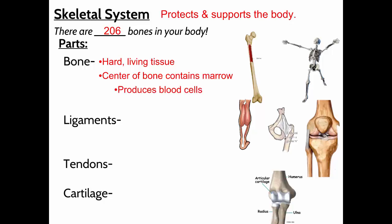Bone marrow produces our blood cells — we have different types: white blood cells and red blood cells — and the bone marrow is what produces those blood cells. It's in the middle of the bones, especially the long bones.